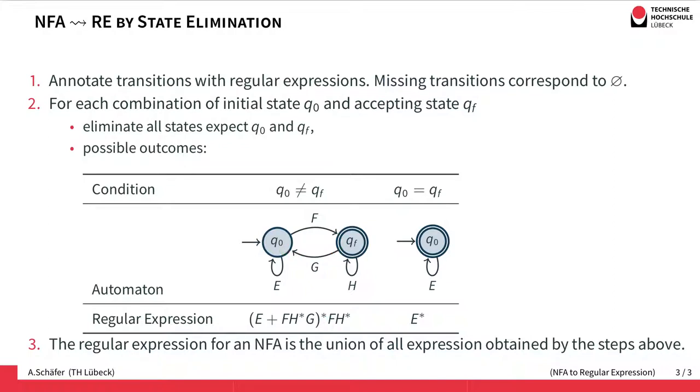At some point we decide that we are done with it, and we take the last F transition to go to the final accepting state Qf. In Qf we can do a couple of H loops, so we get this H star here.